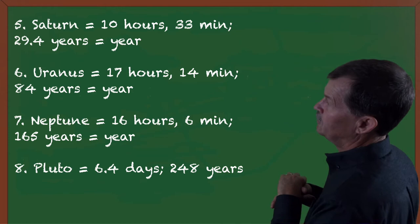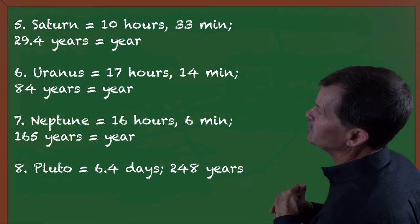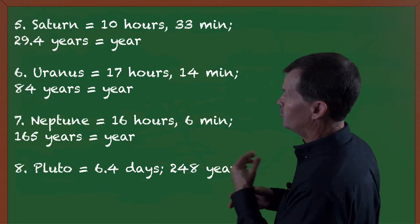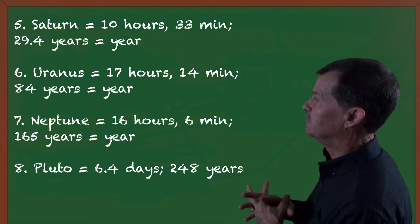Then, we have Saturn. Saturn has a rotation that's about twice as fast as the Earth, which is 10 hours and 33 minutes. But, it also takes 29.4 years to make one lap around the sun. So, that's from Earth's perspective.